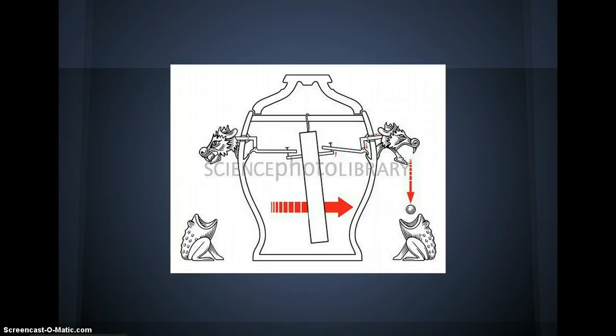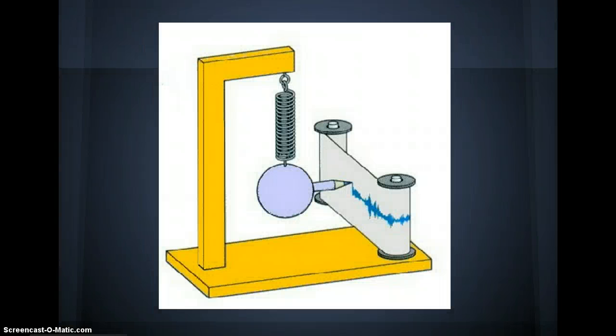It was a while before the next seismographs were made. Most early seismographs were heavy pendulums with pens on them. During an earthquake, the pendulum would keep it still while the earth was moving around it.